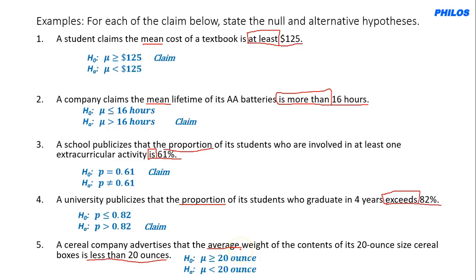The second thing we want to look at is how to determine the type of test. We have one-tailed tests and two-tailed tests. One-tailed tests have two divisions: right-tailed and left-tailed. Another name for a one-tailed test is a directional test.